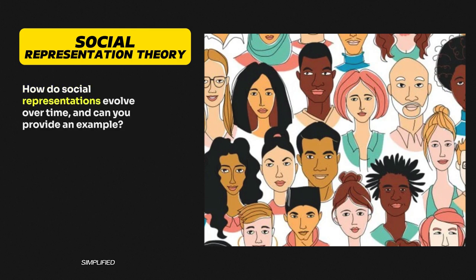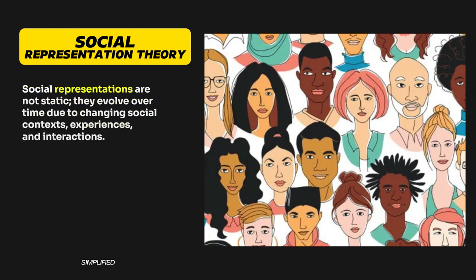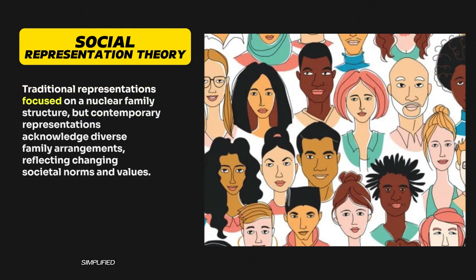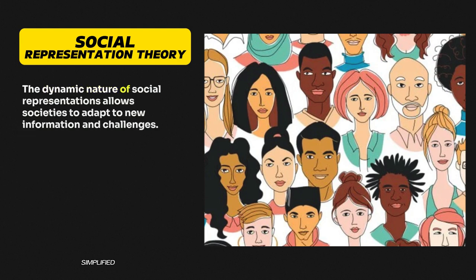Question 5: How do social representations evolve over time, and can you provide an example? Social representations are not static — they evolve over time due to changing social contexts, experiences, and interactions. Take the representation of family as an example. Traditional representations focused on a nuclear family structure, but contemporary representations acknowledge diverse family arrangements, reflecting changing societal norms and values. The dynamic nature of social representations allows societies to adapt to new information and challenges.